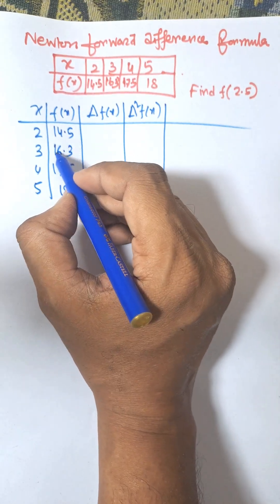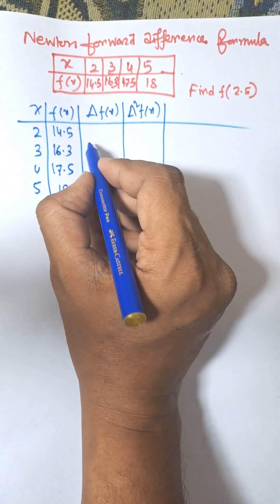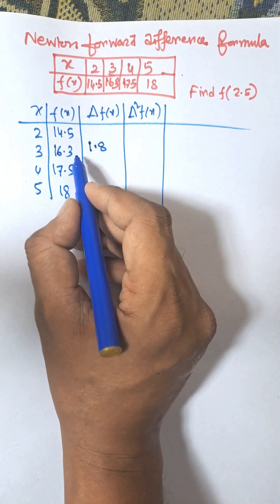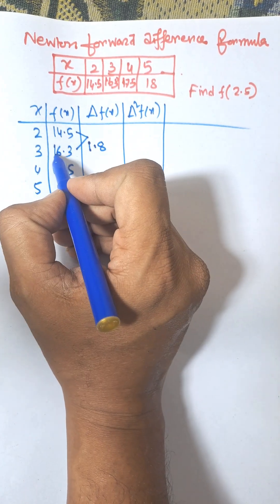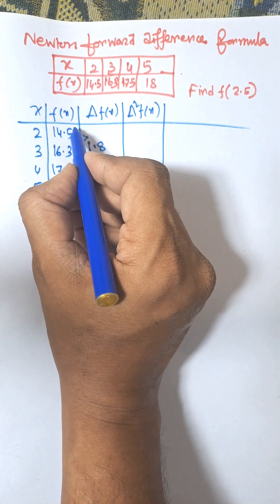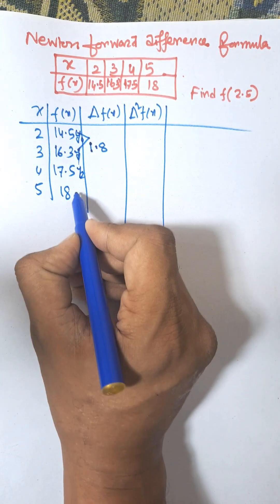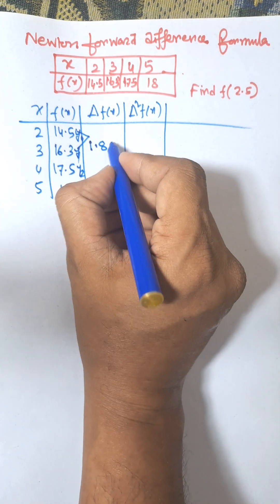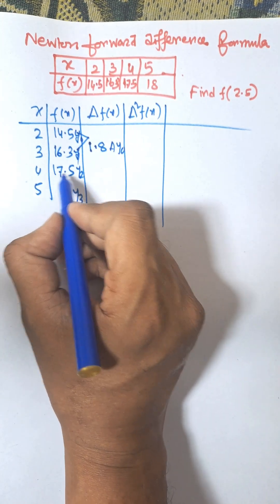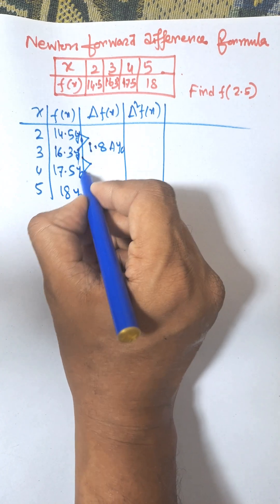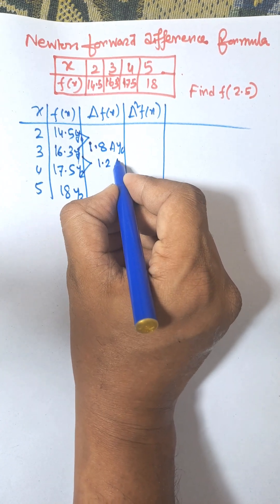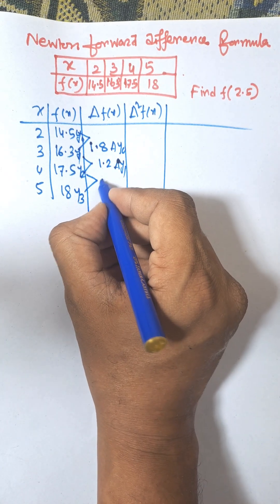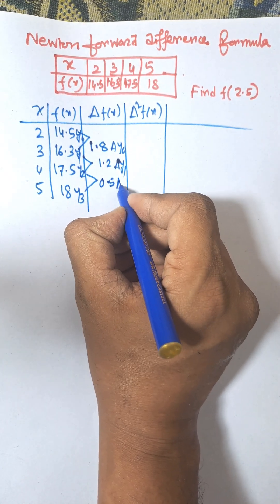The first order differences: 16.3 minus 14.5 equals 1.8, that is del y₀. Always find the gap from lowest to highest — this is y₀, y₁, y₂, y₃. Then y₁ minus y₀ equals del y₀, that is 1.8. Then 17.5 minus 16.3 equals 1.2, that is del y₁. Then 18 minus 17.5 equals 0.5, that is del y₂.